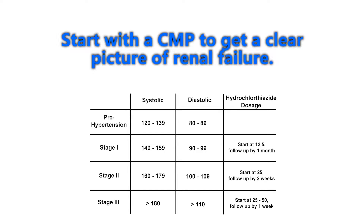At stage one — systolic 140 to 159 or diastolic 90 to 99 — start at a low dose thiazide diuretic, like hydrochlorothiazide at 12.5 milligrams, and check the patient in one month. If they have stage two hypertension — systolic 160 to 179 or diastolic 100 to 109 — you can start at a higher dose of hydrochlorothiazide, say 25 milligrams daily, and follow them up in two weeks.